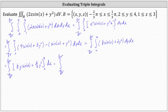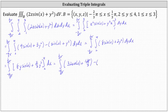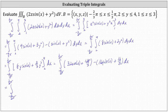We determine F of four minus F of two by performing substitution for Y. When Y is four, we have 32 sine X plus 128-thirds, minus when Y is two, we have 16 sine X plus 16-thirds. Simplifying, 32 sine X minus 16 sine X gives 16 sine X, and 128-thirds minus 16-thirds equals 112-thirds.